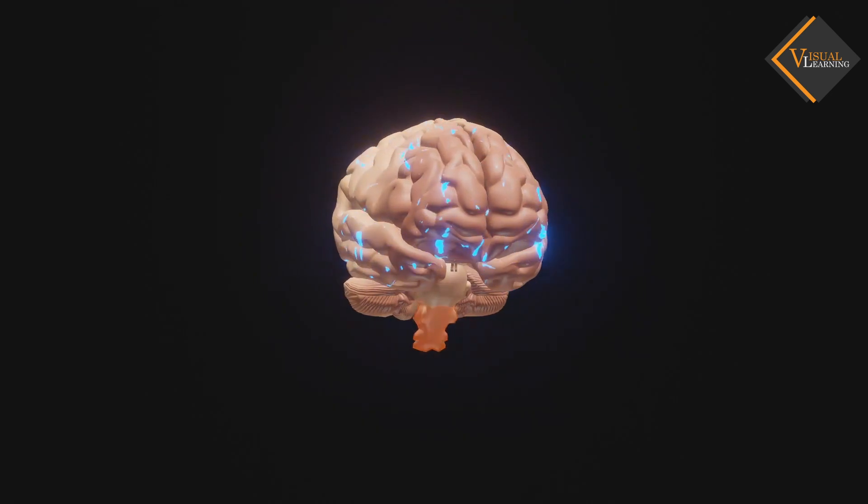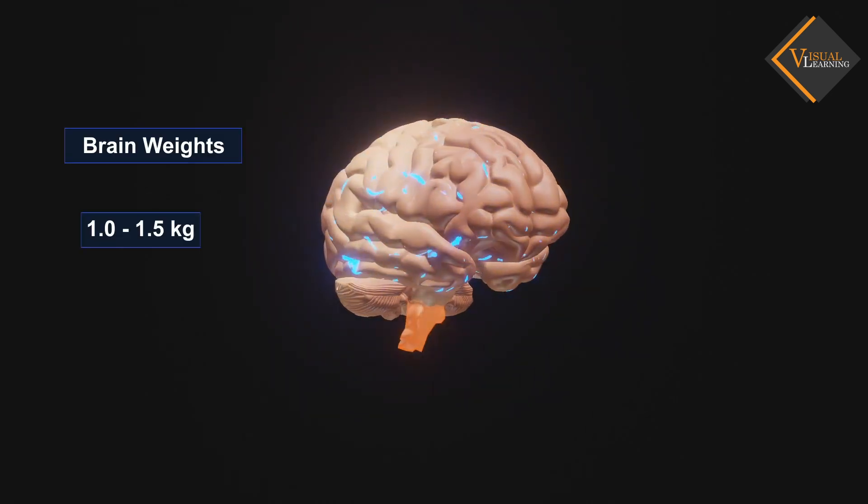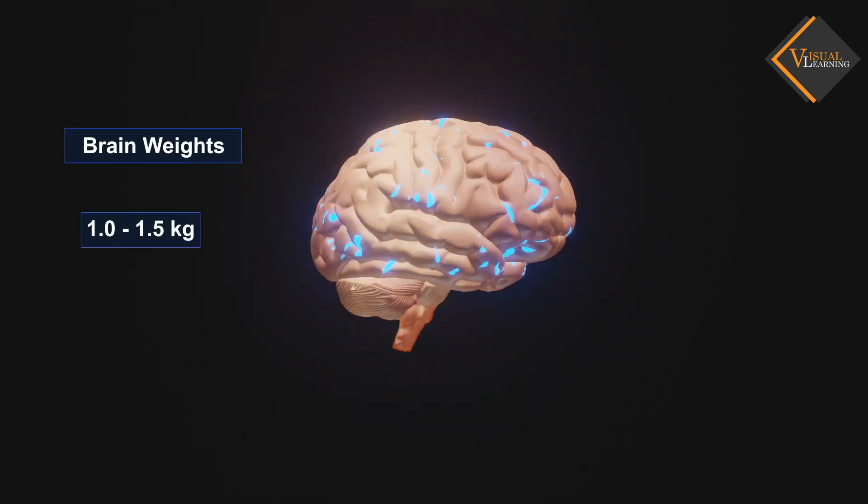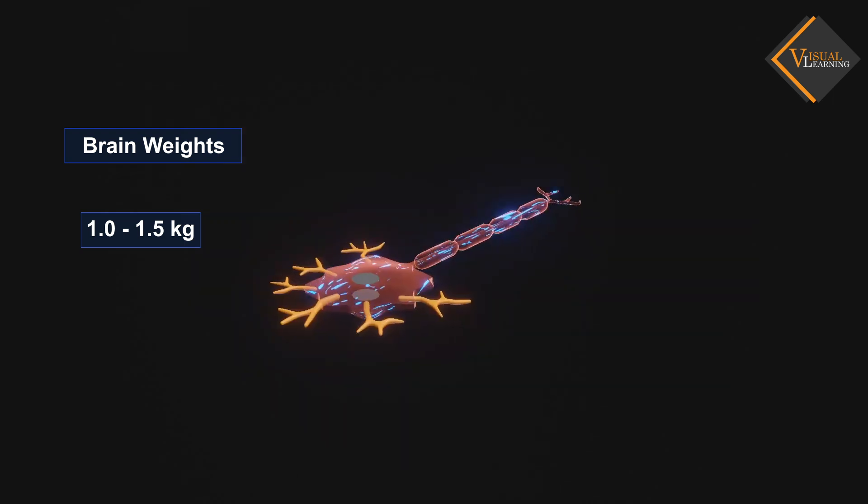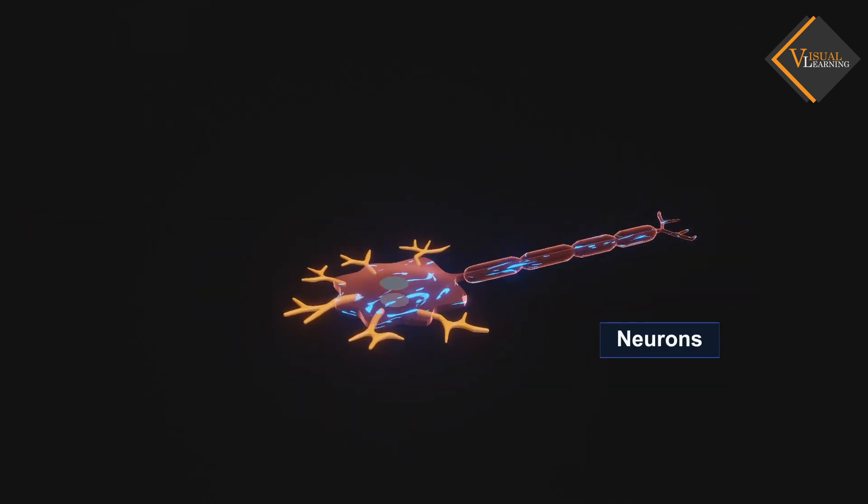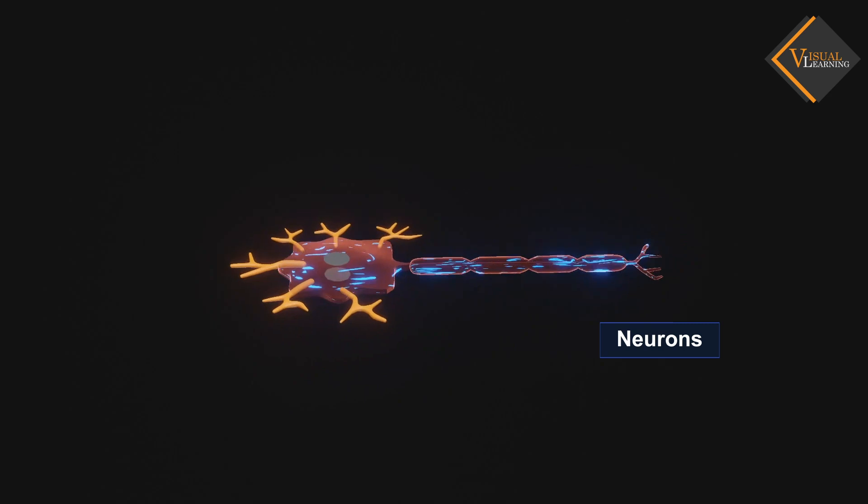On average, an adult brain weighs between 1 kg to 1.5 kg. It is mainly composed of neurons, the fundamental unit of the brain and nervous system.